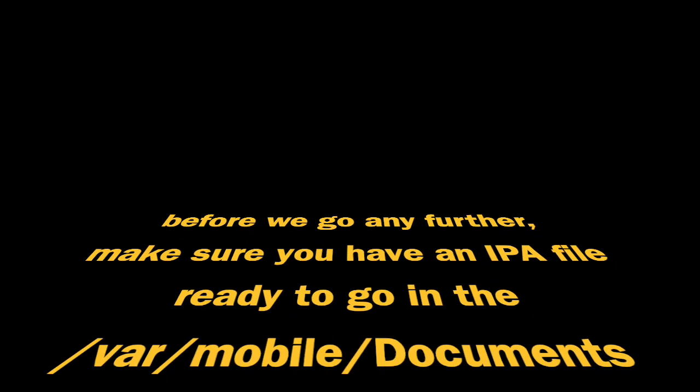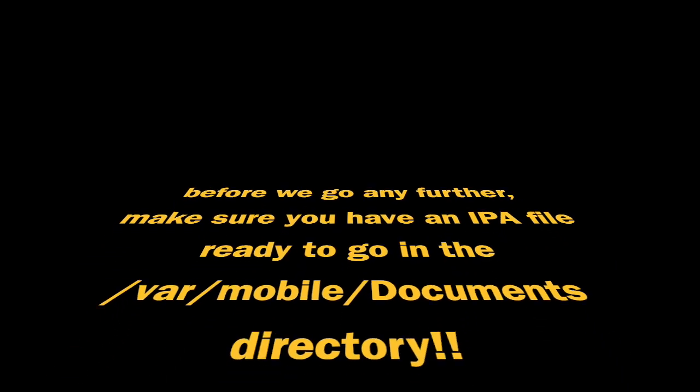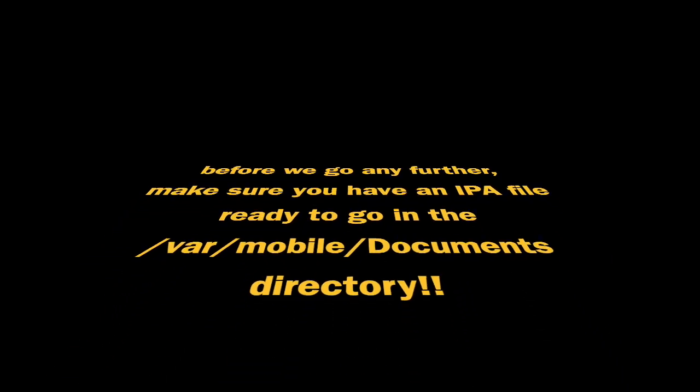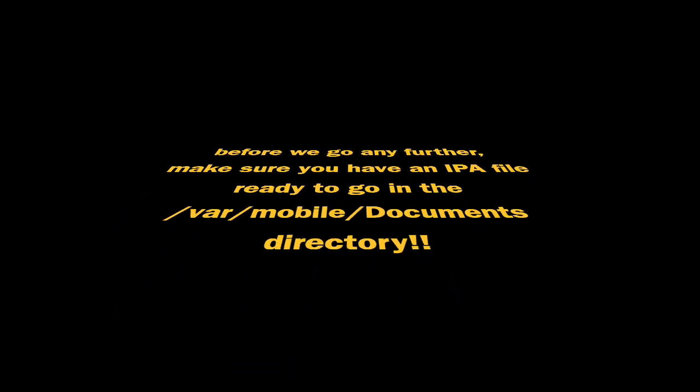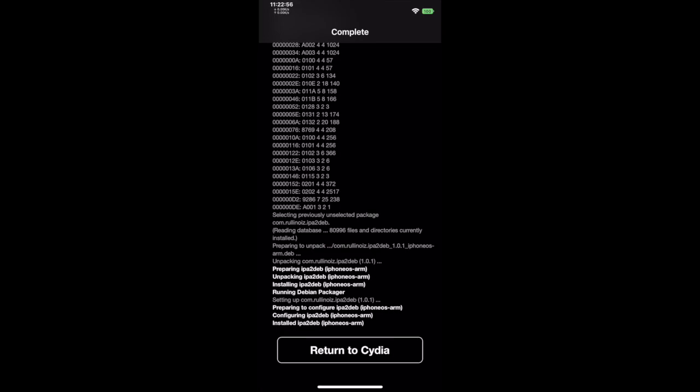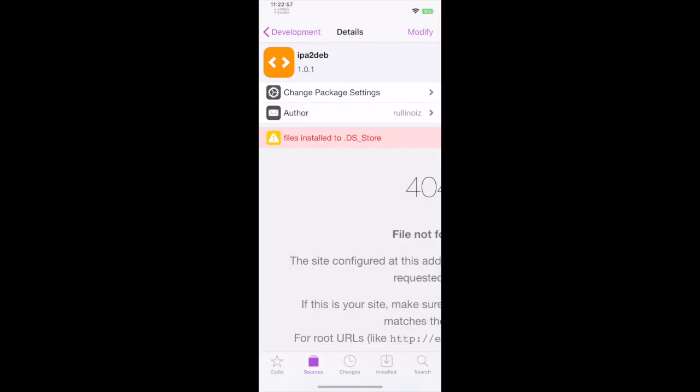Before we go any further, make sure you have an IPA file ready to go in the var/mobile/documents directory. Exit Cydia because we won't need it anymore.